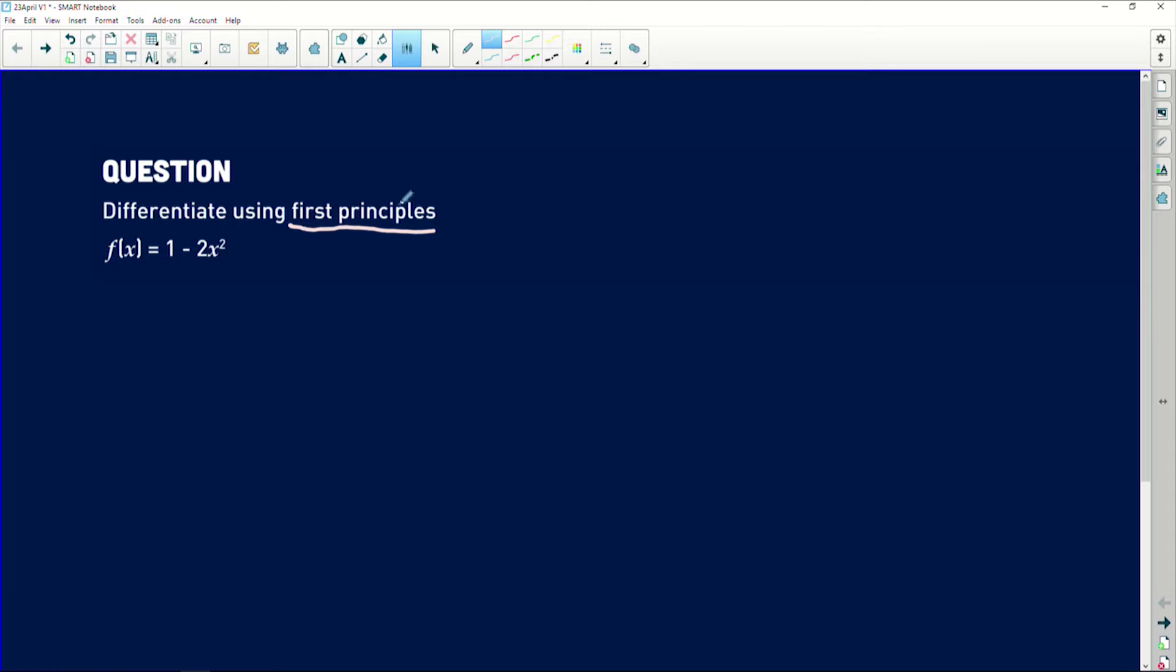These are big words. Whenever you see these words, it means that we require you to apply the first principle formula, which is available in your formula sheet. The formula we use for finding the derivative by first principle is f' of x equals the limit, as h approaches 0, of f of x plus h minus f at x, and everything is divided by h. This is a formula that we use to find the derivative from first principle.